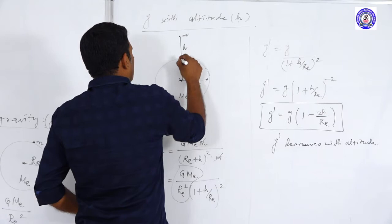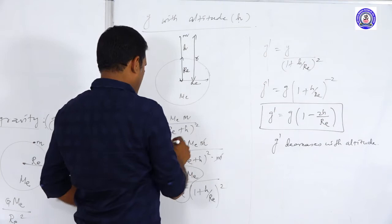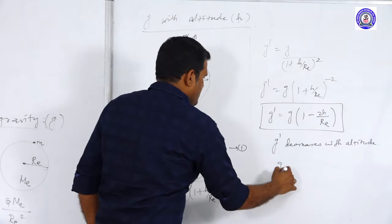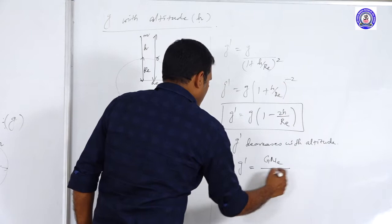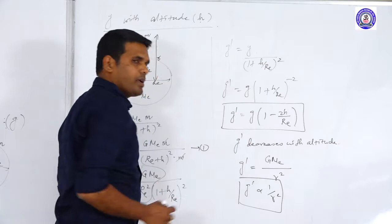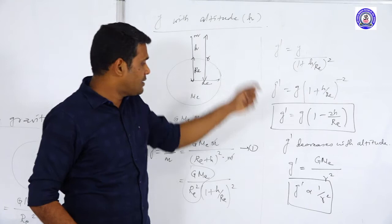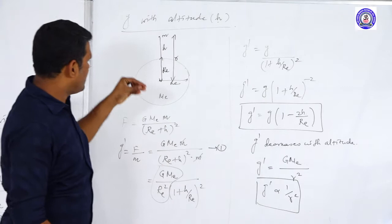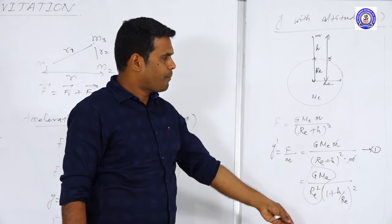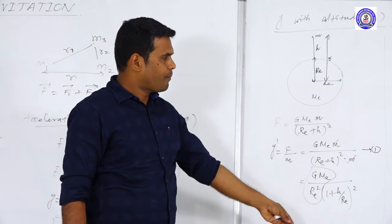If Re + h is taken as small r, then g' = G·Me / r², meaning g' is inversely proportional to r². As r increases from the center of the Earth, the value of g' decreases. This describes the variation of acceleration due to gravity with altitude.